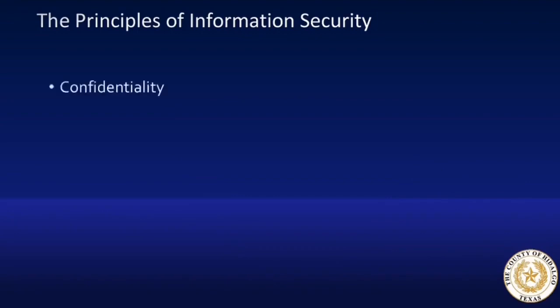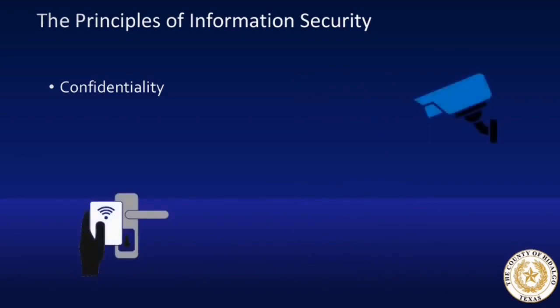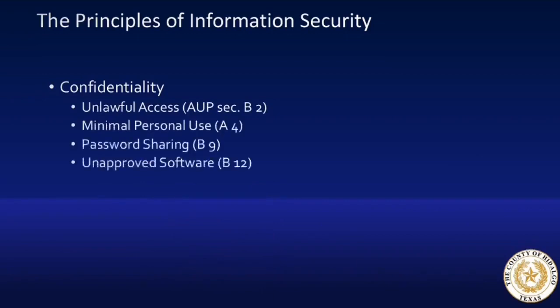Let's begin with confidentiality. There are several methods to keeping restricted information secured. Some are administrative controls such as agreements or policies for employees or vendors. Others are physical controls like door access or surveillance cameras. There are also technical controls such as software and hardware systems throughout our network, such as the credentials to log into your computer, encryption and monitoring software, or any combination of these which are part of the county's requirements and regulations. Here are some examples of the administrative controls listed in the Hidalgo County Acceptable Use Policy.